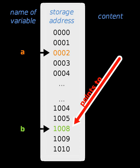In computer science, a pointer is a programming language object that stores the memory address of another value located in computer memory. A pointer references a location in memory, and obtaining the value stored at that location is known as dereferencing the pointer.